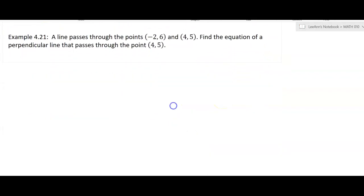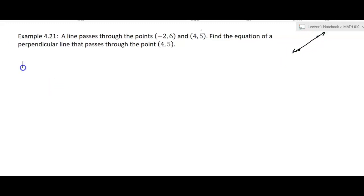All right, so now there's another example that's a little bit different. A line passes through the points, and they give us two points. Find the equation of a perpendicular line that passes through the points. So you think about the points negative 2, 6, and 4, 5 maybe, and there's some line there. Well, we can calculate the slope by using the slope formula.